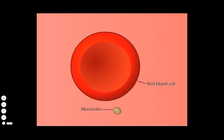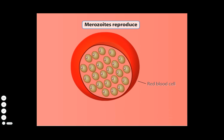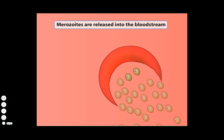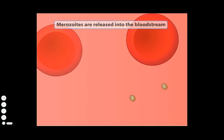In the bloodstream, the merozoites infect red blood cells, where they again reproduce and burst out of the infected cells. The resulting merozoites can infect other red blood cells, yielding a cycle of infection and eruption.